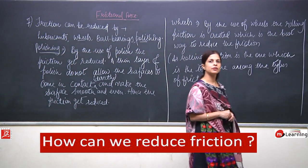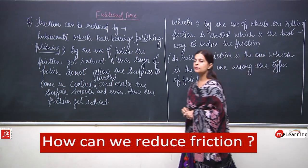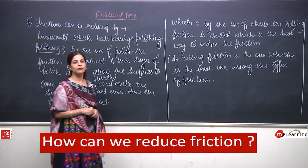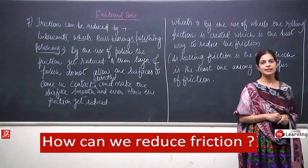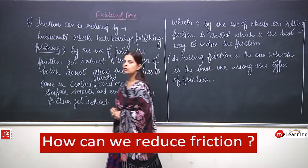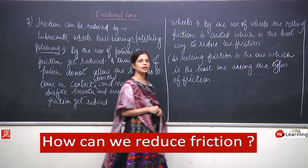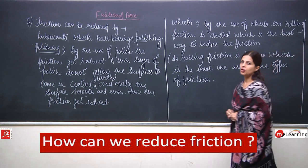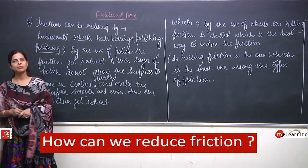Wheels are well experienced by everyone — we all use suitcases, and when a suitcase has wheels, dragging it becomes very easy. Rolling friction is created because of the wheels, and rolling friction is the least among static and sliding friction — the static is the highest, then sliding, and rolling is the least. So the friction is created in the least amount due to rolling friction. This was all about question seven.